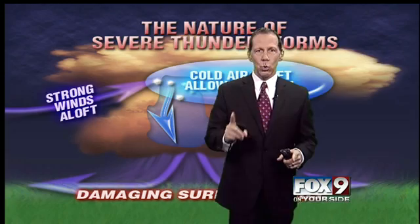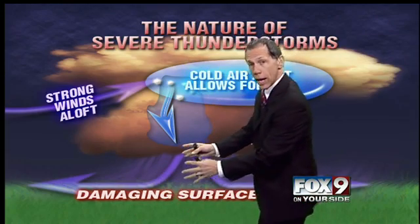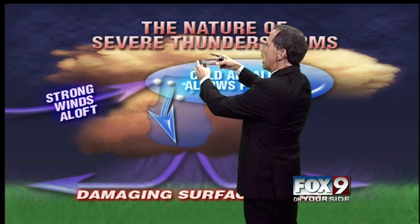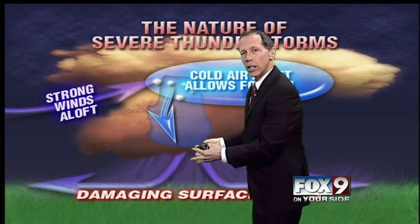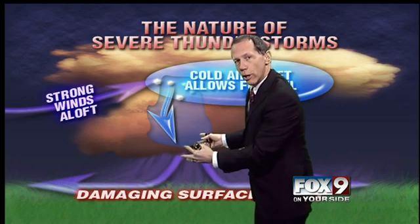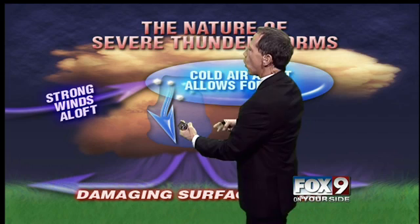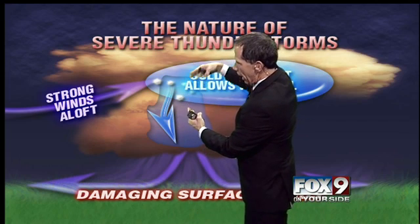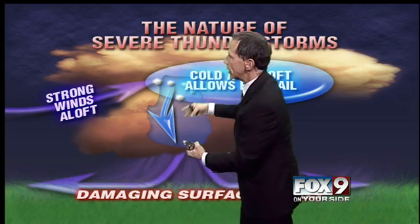Here's the key and this is why: when you get a thunderstorm to form, you have to have air rise and cool. Warm, moist air rises, it cools, condenses — it makes clouds and then rain. Well, when the rain falls, it brings cool air down. The water cools the air. So that updraft that's coming in, warm and moist, when it gets hit with the downdraft of cool air — which can sometimes produce damaging surface winds — it tends to kill the updraft.